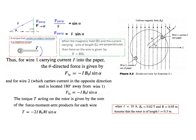Plugging in the given values for I, B₀, R, and L into the torque formula, we find the torque equals −0.006·sin(α) newton-meters. This is how we understand what Mr. Fitzgerald derived in just a couple of lines.